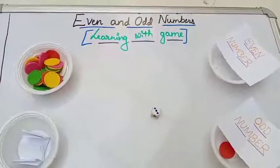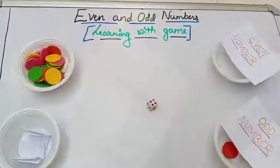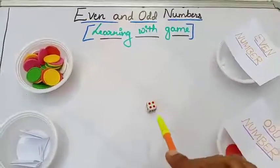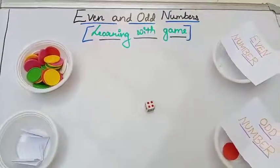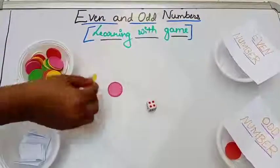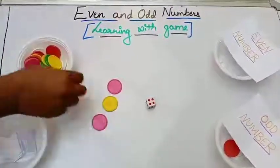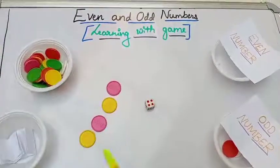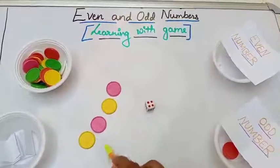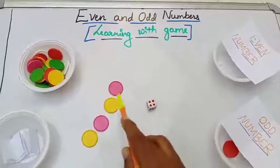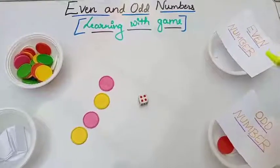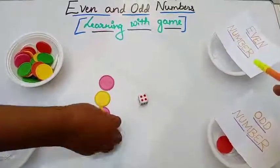Next round. One, two, three, four — you rolled four. Take four coins from the bowl: one, two, three, and four. Now tell me, is four an even number or odd number? Yes, four is an even number. That means all four coins will go to the even number bowl — put them in the even number bowl.